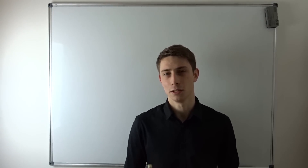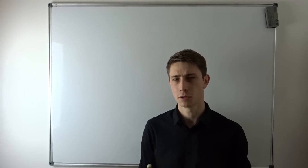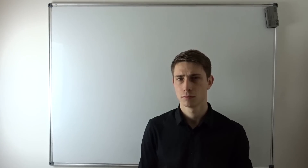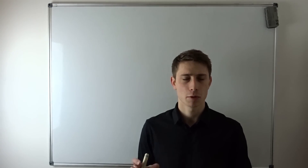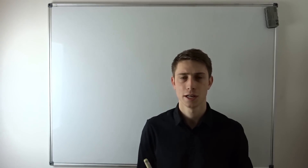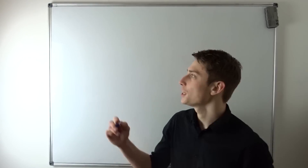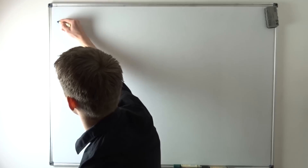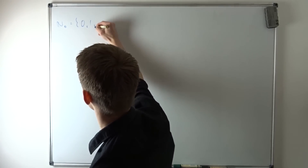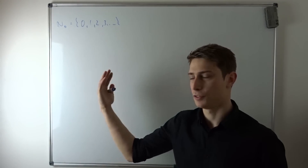So let's take a look at the natural numbers. We are going to include zero into the natural numbers, to make at least a monoid out of natural numbers. So the natural numbers, including zero, are just zero, one, two, three, etc., up until infinity.